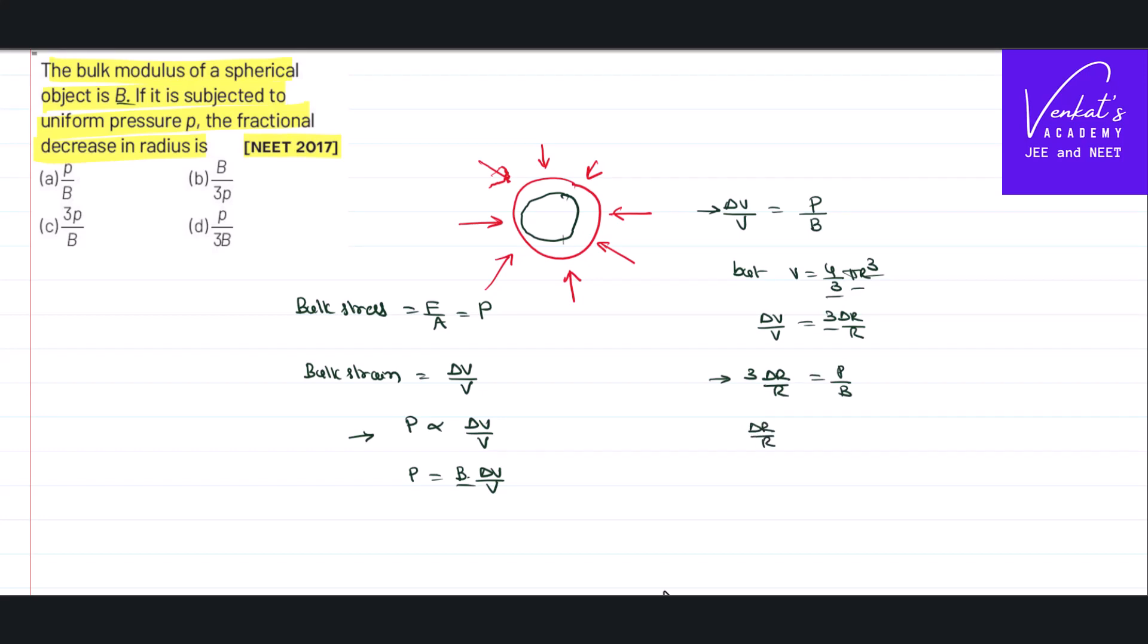So fractional change in the radius, delta r by r, is P by 3B, which is the answer for the problem.